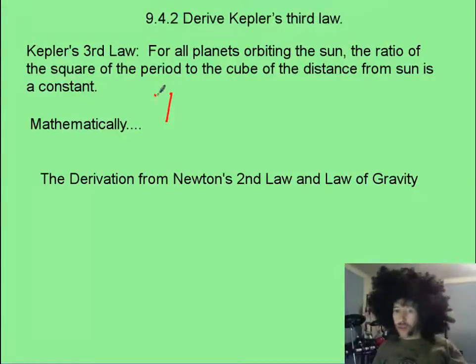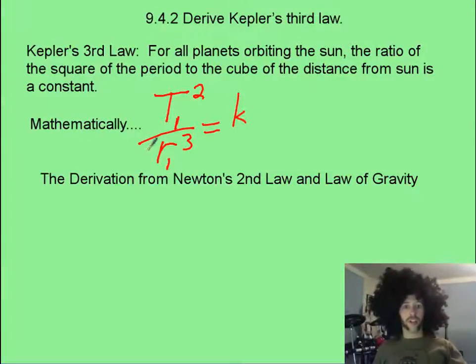Kepler took Tycho Brahe's observations and came up with a pretty cool party trick. He said that if you took the period of any planet, squared it, and put it over the distance of that planet from the sun and cubed it, that equaled a constant.